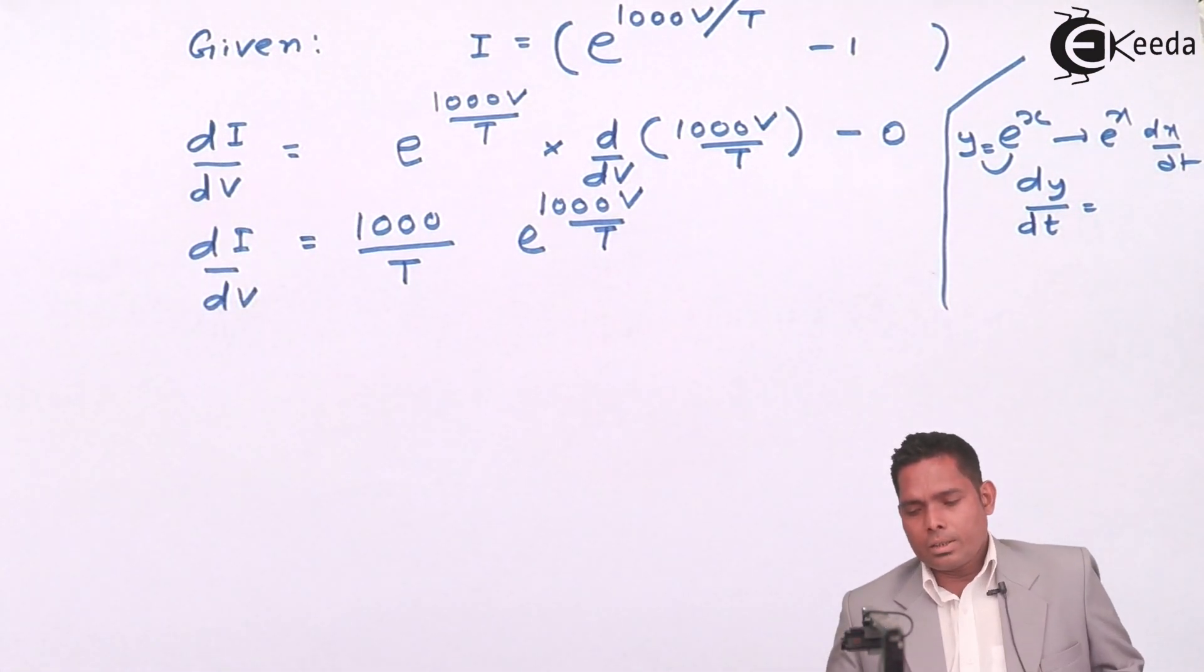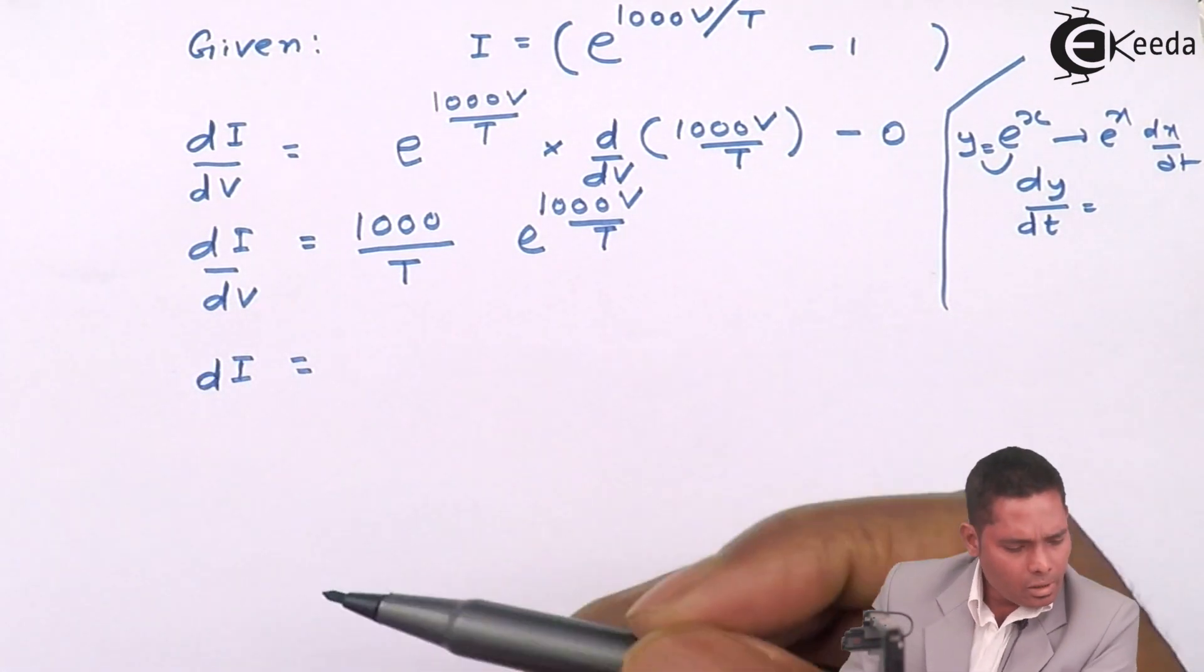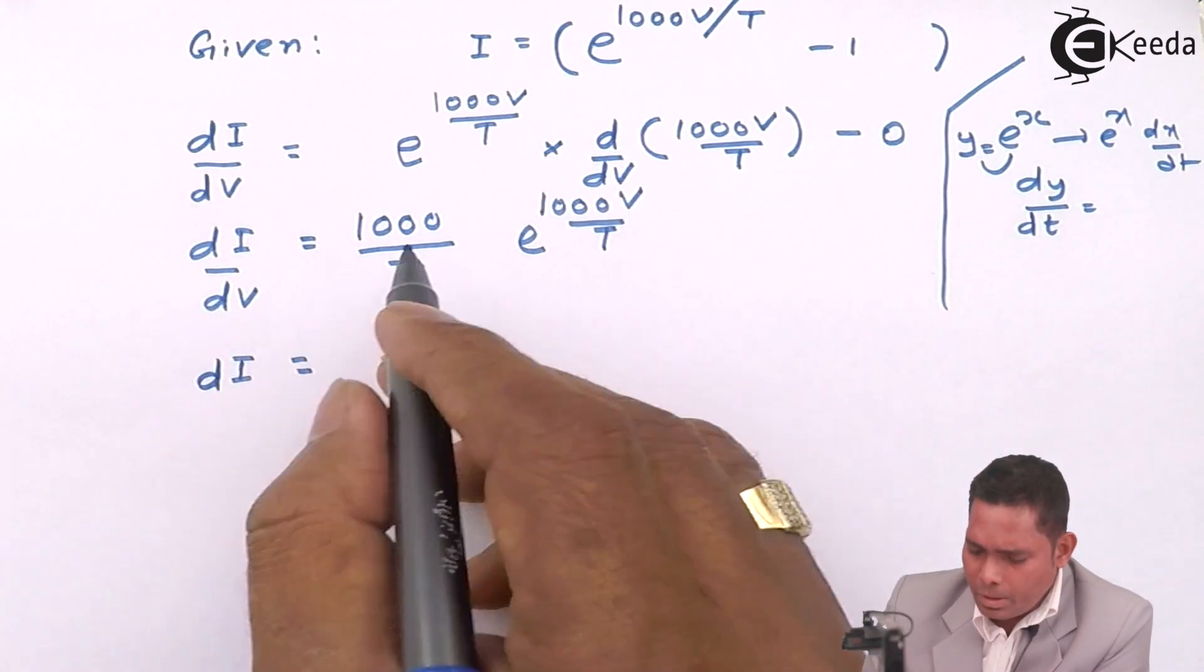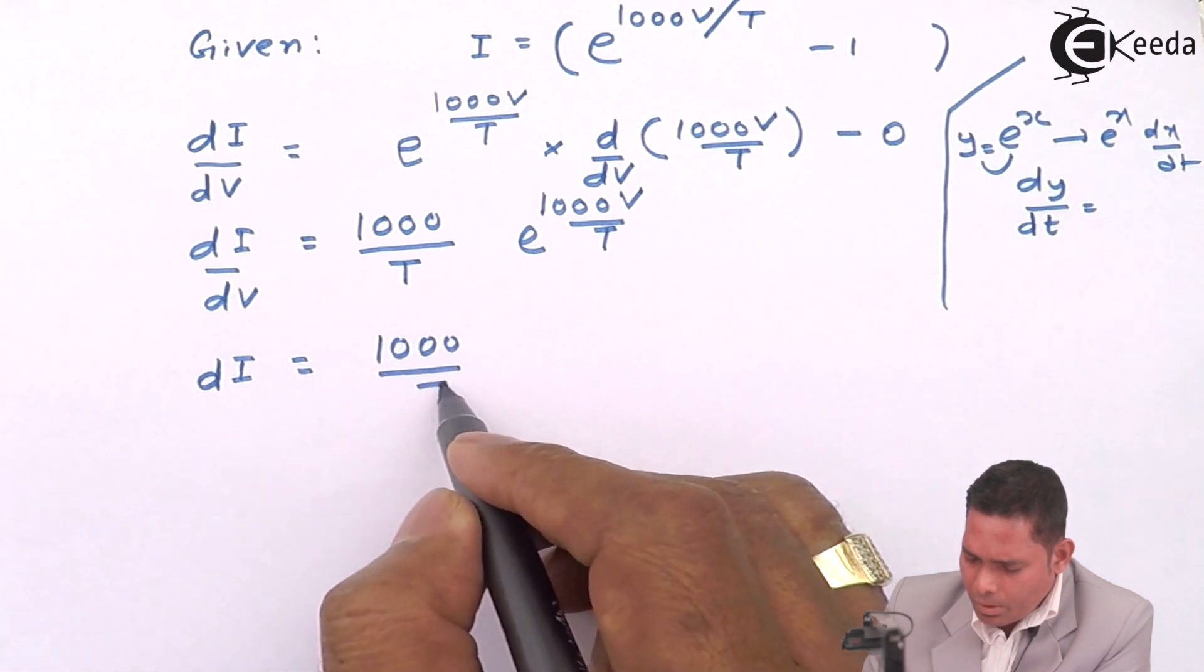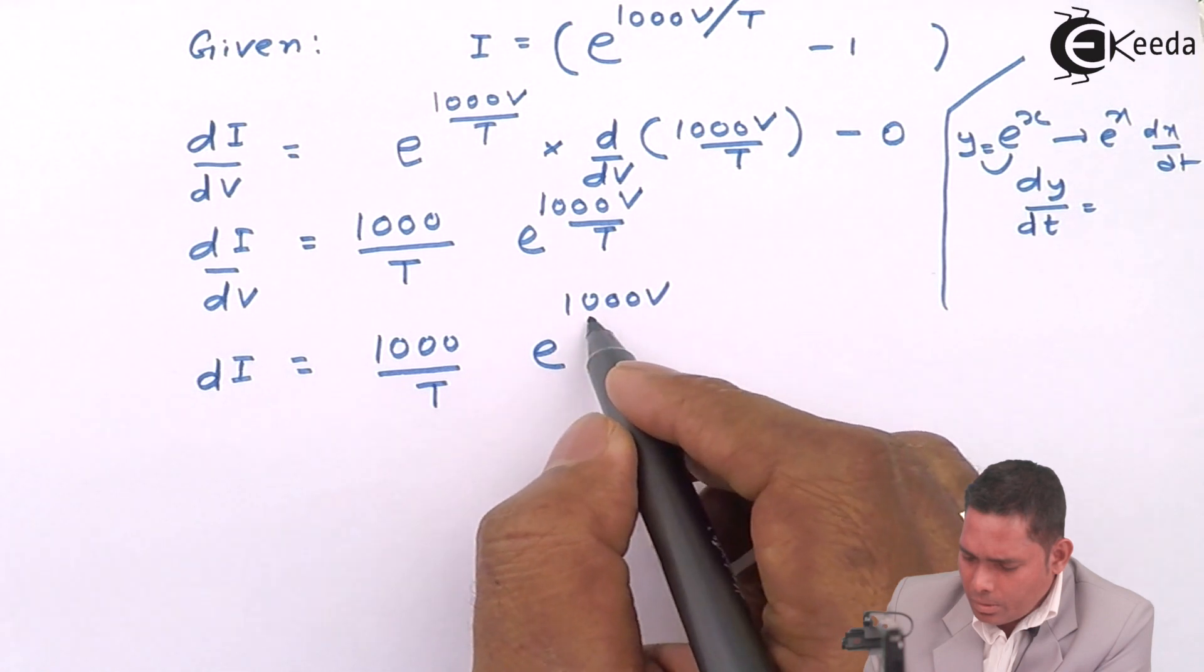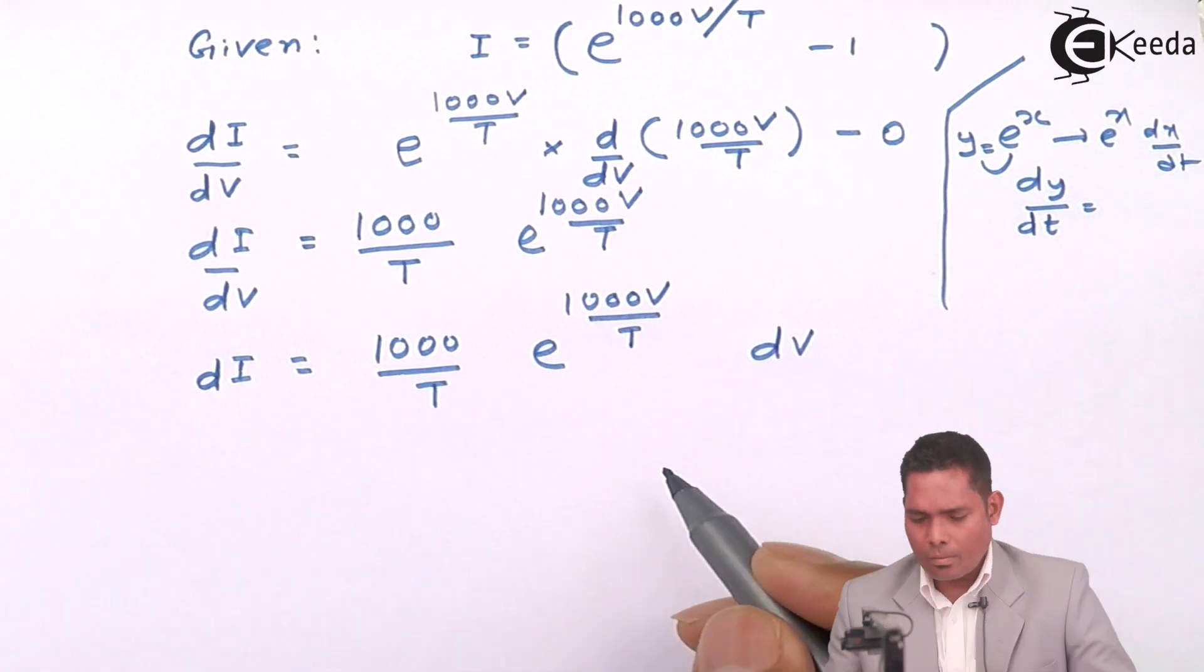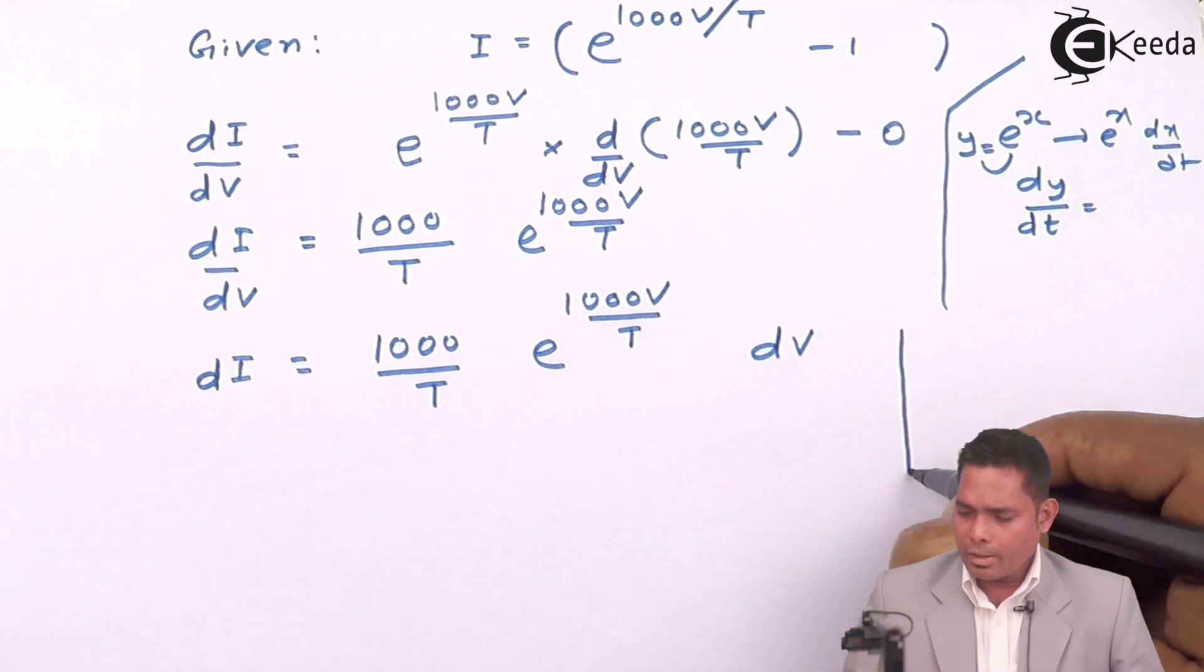Then this dI I will get by plugging the values from the question. I will multiply by dV: 1000/T times e raised to 1000V/T times dV. Now what is given?